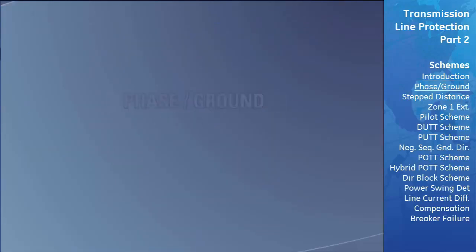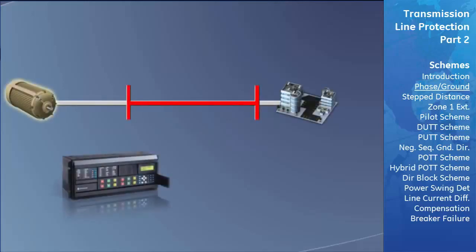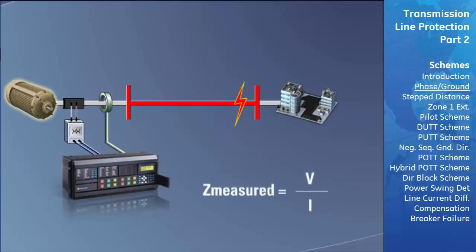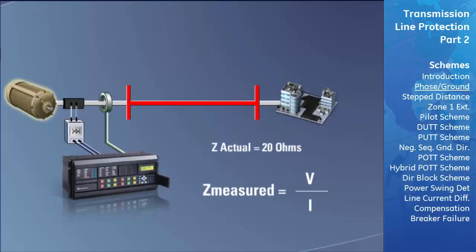A distance protection relay detects and clears faults on a transmission line. It accomplishes this for both phase and ground distance elements by measuring current and voltage, then calculating the impedance of the line. If the measured impedance is less than the known impedance of the line, this indicates the line is shorter than expected, meaning it is faulted. However, due to the inherent inaccuracies of CTs and VTs, the impedance calculations made by distance relays cannot be guaranteed to be extremely accurate.